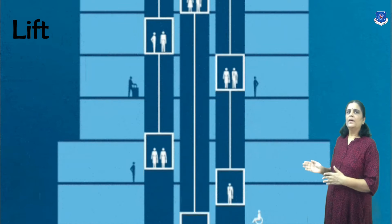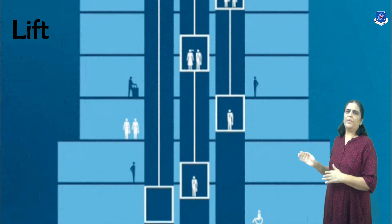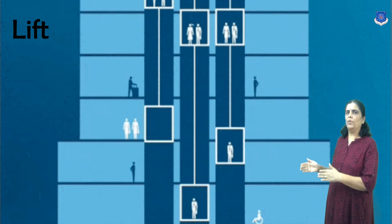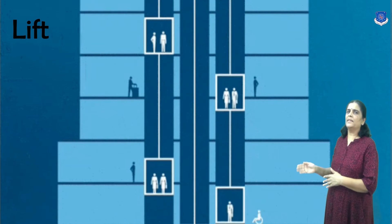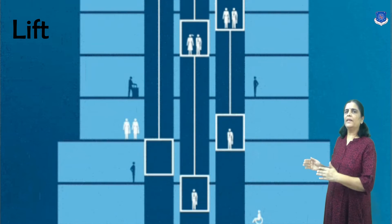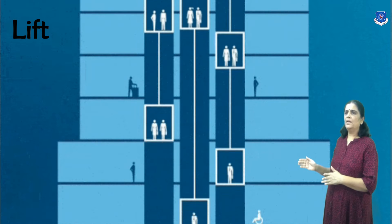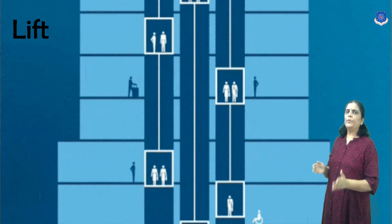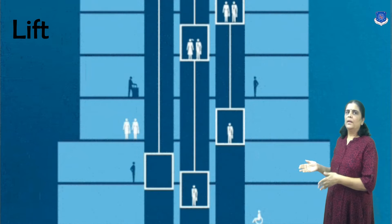What is a lift? A lift is a raising and lowering mechanism equipped with a car or platform that moves along guides in a substantially vertical direction, transporting passengers or goods between two or more floors of a building.